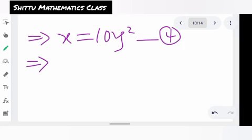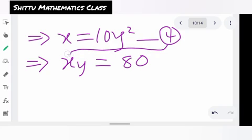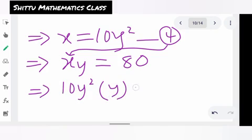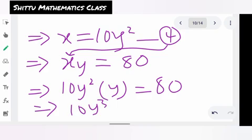Now we are going to put this equation 4 back to equation 1, where we have xy equals to 80. Putting equation 4 here, we are going to have 10y squared times y equals to 80.